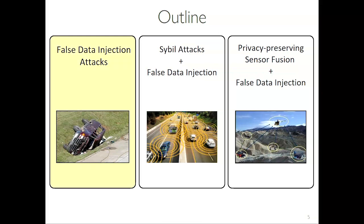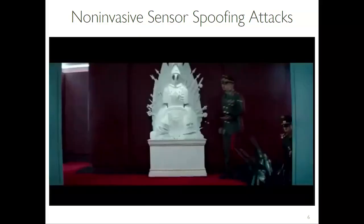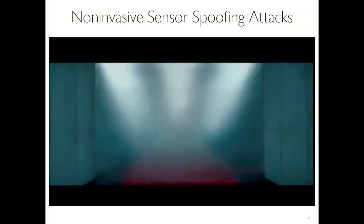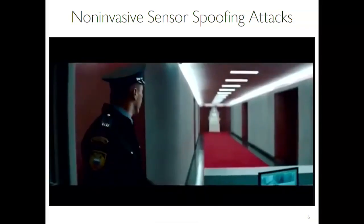What is a false data injection attack? Let's motivate with this scenario from a movie. These guys were trying to spoof a sensor — here the sensor is the security guard's eyes, sensing a physical signal. What these guys did is use a device to conceal the actual physical environment and put another physical signal on top of it, making the sensor read something that is not realistic.